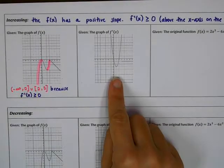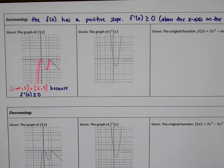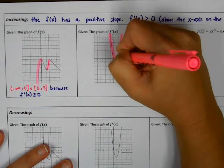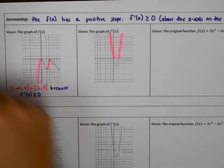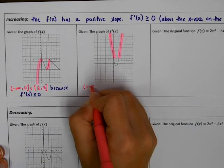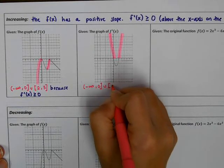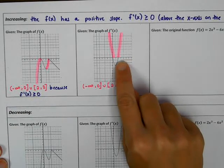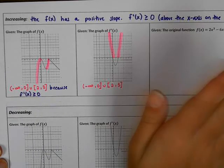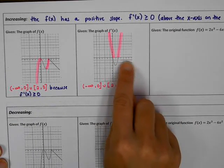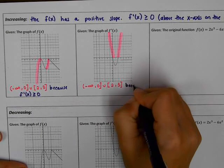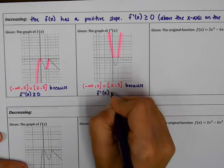If you're given the graph of f'(x) instead, you don't look for where this graph goes uphill — you already have the derivative. You just look for where the derivative is positive, meaning above the x-axis. Those two sections give the same intervals: (-∞, 0] and [2, 3]. Note there's a small portion of the derivative graph that showed me where to stop at 3 rather than going to infinity.